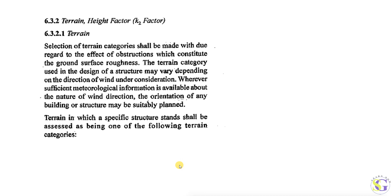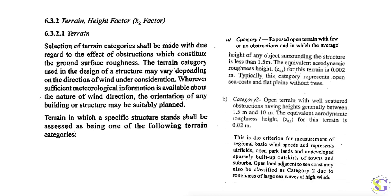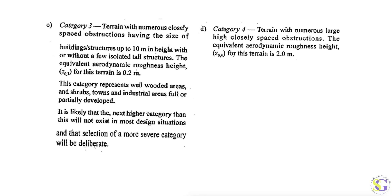Now for terrain categories: Category 1 is open terrain with no obstructions — flat terrain portions. Category 2 has obstructions generally between 1.5 meters to 10 meters height, such as small open parkland or undeveloped areas. Category 3 has obstructions above 10.5 meters height or isolated tall structures. Category 4 has highly close-spaced obstructions — very densely spaced obstructions. For this current numerical, I am going to take Category 1.